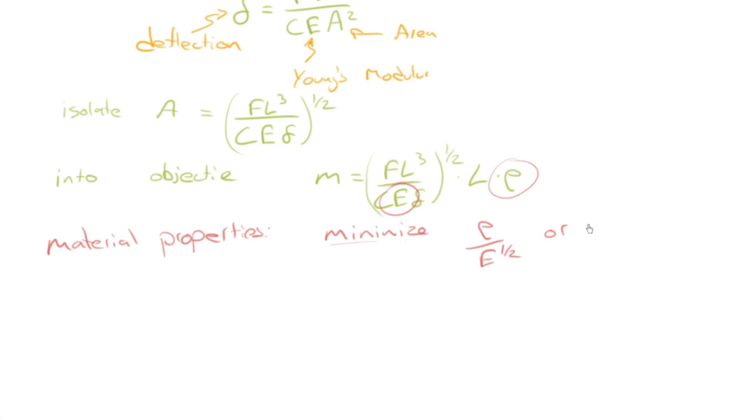If we look at the material properties, we've got E to the one-half and we've got rho. So just the material properties that we want to look for would be we want to minimize rho over E to the one-half. Or often, instead of minimizing, we like to maximize, so we say we're going to maximize E to the one-half over rho.